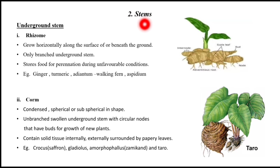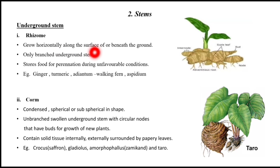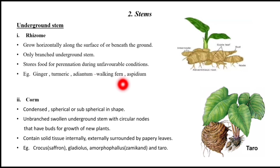Stems: we call them underground stem, sub-aerial stem, and aerial stem. Underground stem is classified as rhizome, corm, tuber, bulb, and rizome. Rhizome is an underground stem which is branched and grows horizontally on or beneath the surface. It stores food, which is helpful for perennation during unfavorable conditions. Examples are ginger, turmeric, Adiantum, and Aspidium.